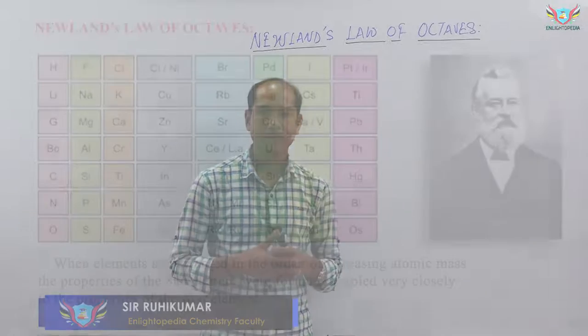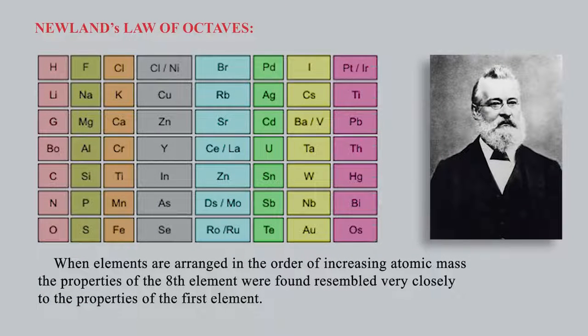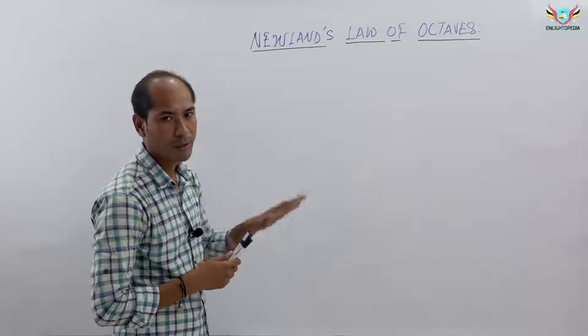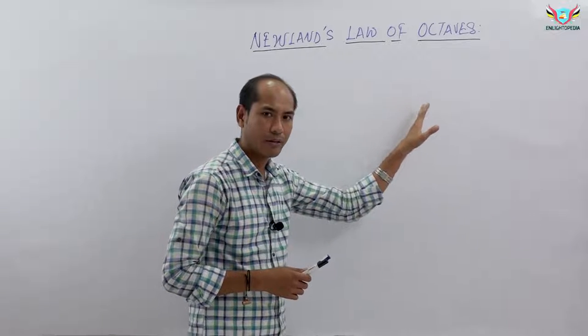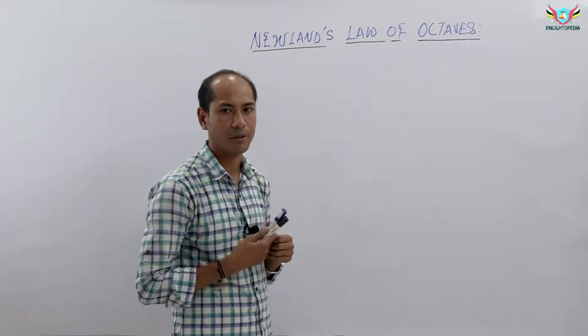When elements are arranged in the order of increasing atomic mass, the properties of the eighth element were found to resemble very closely the properties of the first. However, the elements are arranged in ascending order of their atomic mass.